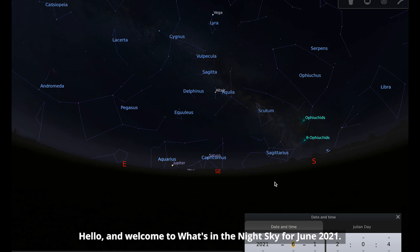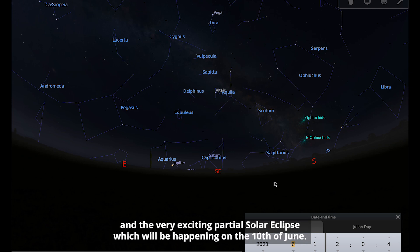Hello and welcome to What's in the Night Sky for June 2021. This month we're going to be talking about the planet Jupiter, the constellation of the month which is Bootes, and the very exciting partial solar eclipse which will be happening on the 10th of June.